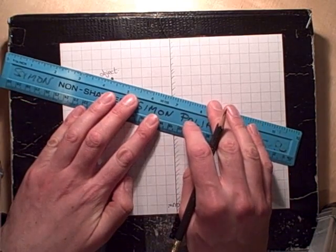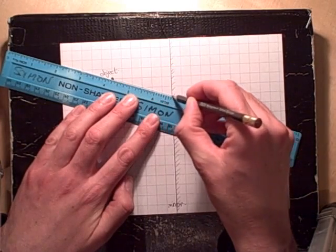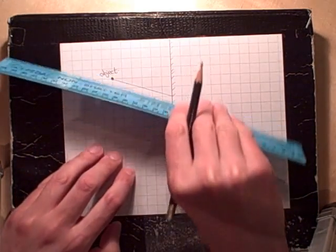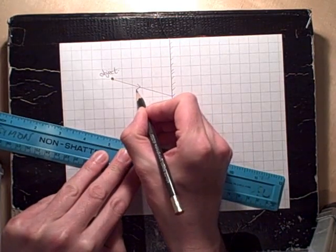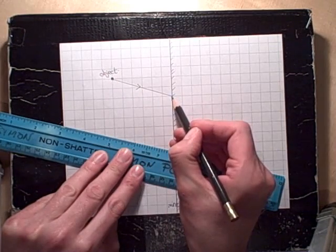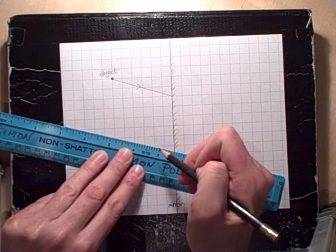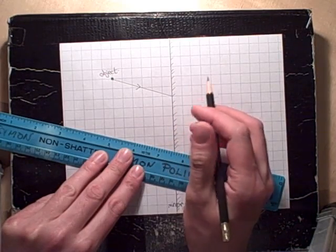The next job is to draw in a ray going from the object until it hits the mirror. This is called the incident ray. So we draw a continuous straight line with the ruler, and then to show which way that's going, I put an arrow on. As you can see, I've made it hit the mirror exactly on a square. You'll see why I did that, to make my life easier later in the process.